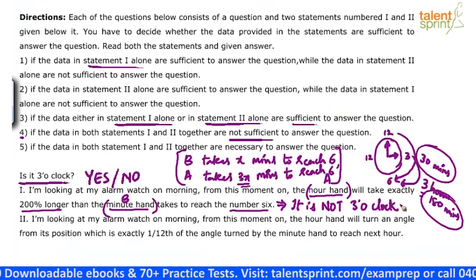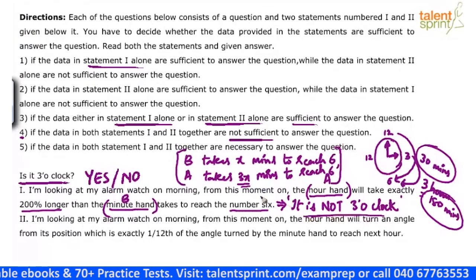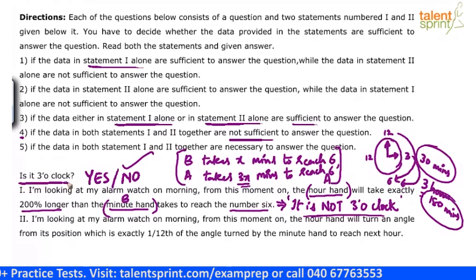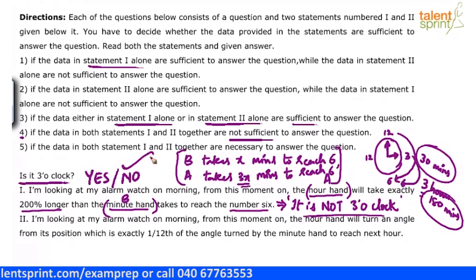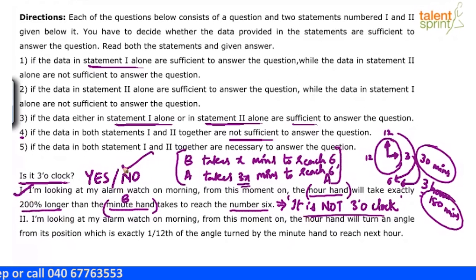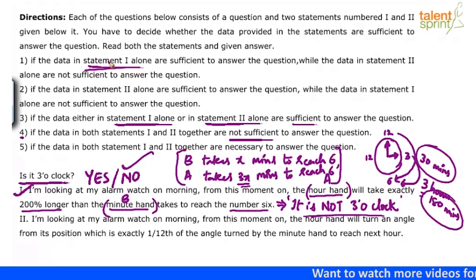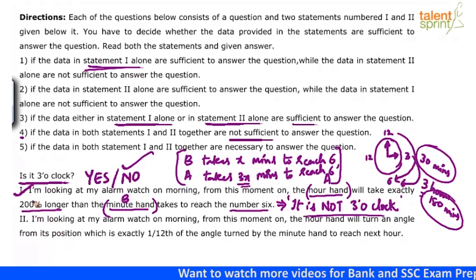Now this is the tricky part. Because it is not 3 o'clock, can you say the answer is no? The question was, is it 3 o'clock? And the answer is no — it is not 3 o'clock. I am able to answer the question using the data given in statement 1. The answer is no, which is a definitive answer. Statement 1 alone is sufficient to answer the question. However, before marking that answer, you have to look at statement 2. In data sufficiency, never mark the answer without verifying all the statements.